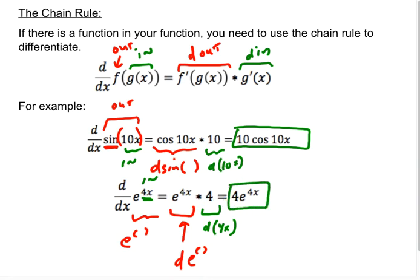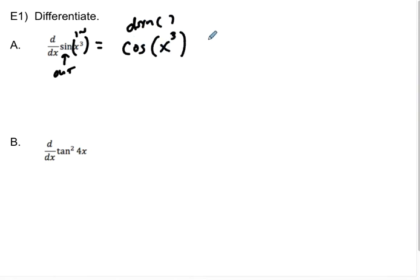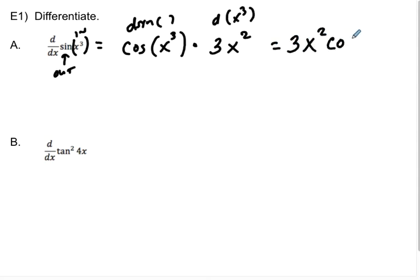Let's do a bunch of chain rule examples. For sine of x cubed, the inside function is x cubed and the outside is sine of that stuff. The derivative of sine of something is cosine of that thing, times the derivative of the inside, which is 3x squared. So the answer is 3x squared cosine of x cubed.